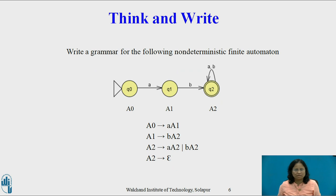I hope all of you have completed this activity. The question was: write a grammar for the following non-deterministic finite automata. Since there are three states in the given NFA, create three non-terminal symbols A0, A1, and A2 corresponding to Q0, Q1, and Q2. State Q0 has a transition to state Q1 on symbol a, so introduce the production A0 → aA1.